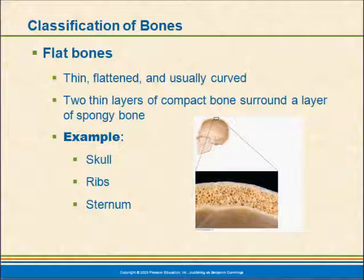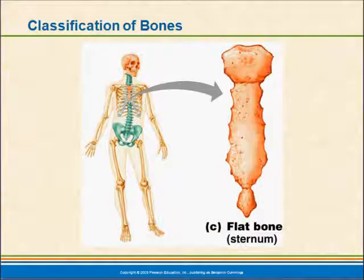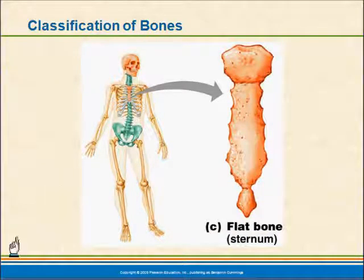Flat bones are thin plates. They are usually curved, like the bones of the skull — two thin plates of compact bone surrounding a layer of spongy bone. Examples include the ribs and the sternum, which would also be considered flat bones. As you see here, the sternum is viewed as a flat bone.